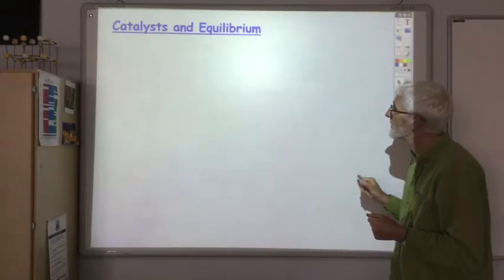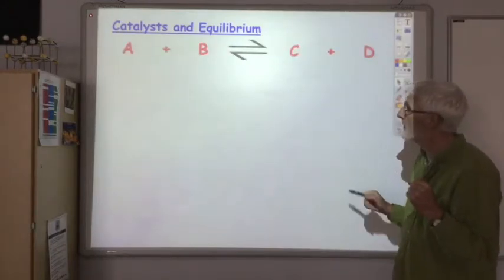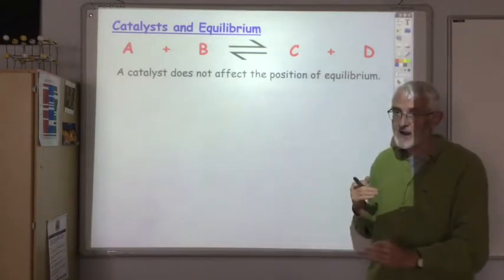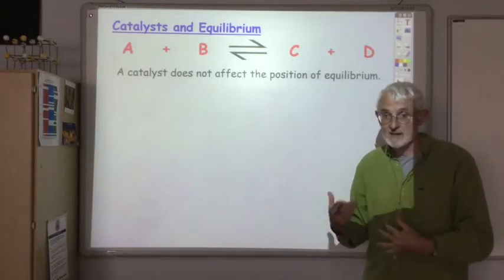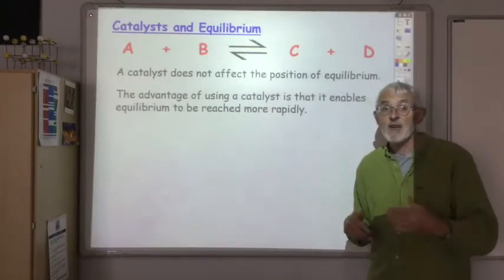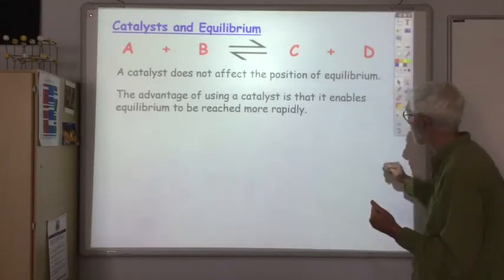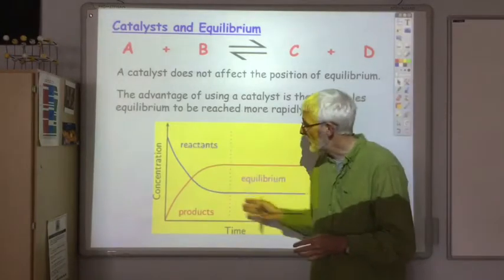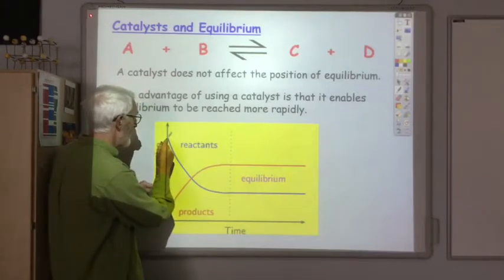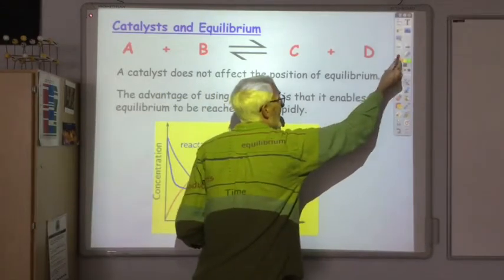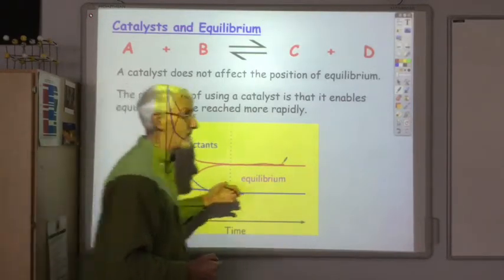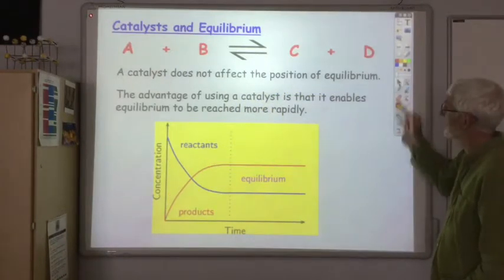The catalyst in equilibrium. So two points to be aware of. Firstly, catalyst does not affect the position of equilibrium. If you end up with 80% product, 20% reactant, you'll still get the same equilibrium whether you use a catalyst or not. Where a catalyst is useful is that it speeds up the time it takes for equilibrium to be reached. It speeds up the forward and reverse reaction. So for example, if this is a reaction without a catalyst, if we did it with a catalyst, we'd still end up with this amount of the blue, but we'd get there faster. And we'd still end up with the same amount of red, but we'd get there faster. Okay, so we reach equilibrium faster, which is always good.